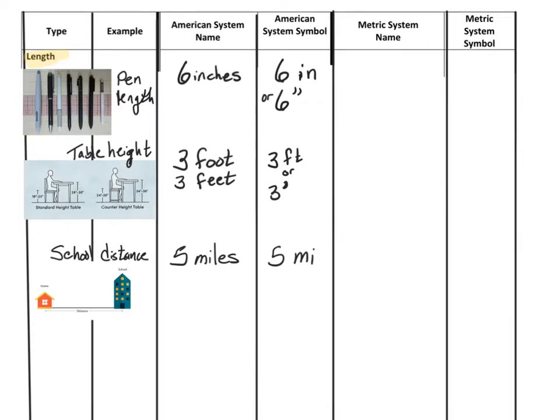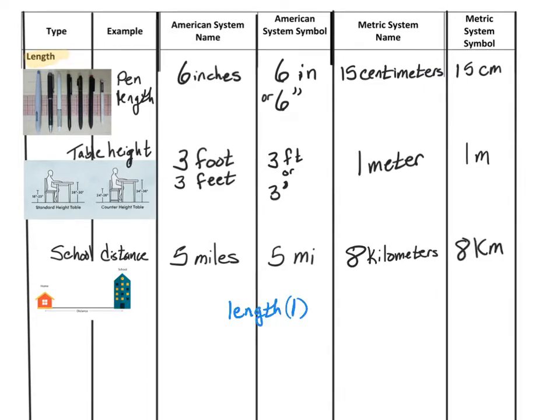In the metric system, we might say that the pen is 15 centimeters, abbreviated CM. The table is about one meter tall, abbreviated M. And that the school is about eight kilometers from home, abbreviated KM. So as you can see, length is measured in a single direction.